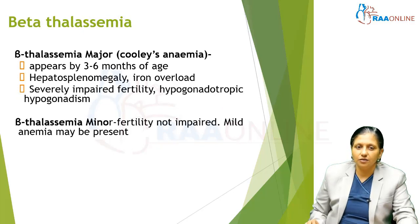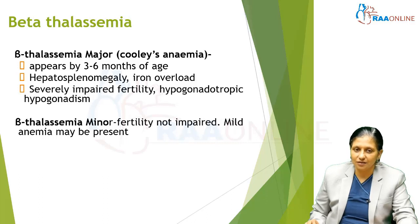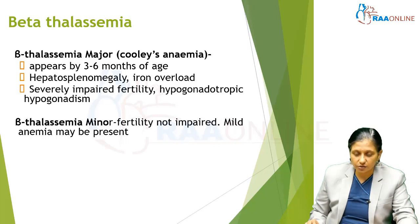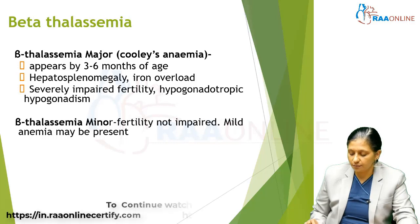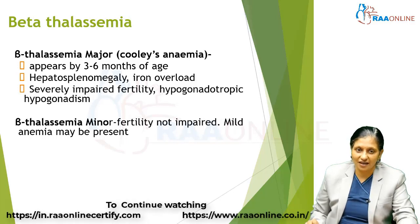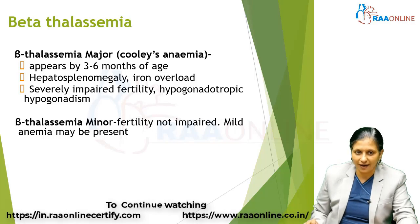Beta thalassemia is of two types: beta thalassemia major and beta thalassemia minor. Major is also called Cooley's anemia — it appears at three to six months of age, with hepatosplenomegaly, iron overload, severely impaired fertility, and hypogonadotropic hypogonadism. In beta thalassemia minor, fertility is not impaired and only mild anemia may be present.